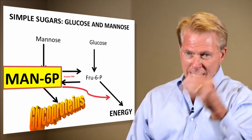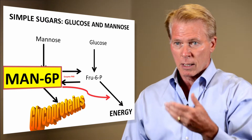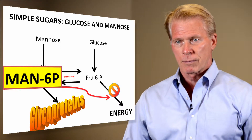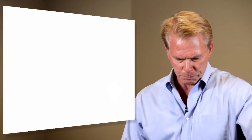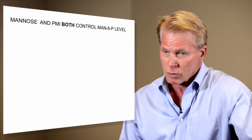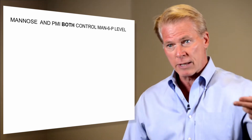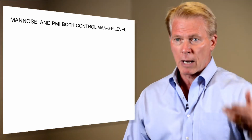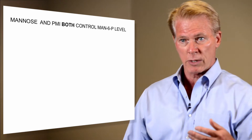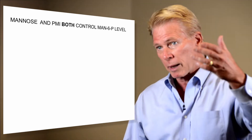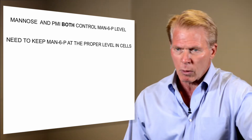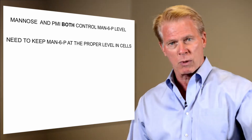It resulted in an inhibition of this process called glycolysis, which is what generates energy. And so those cells died. So mannose can be a friend or it can be a toxin. It depends not only on the level of enzyme that you have, but also on the amount of mannose that the cell has to deal with. Different cells have different amounts of phosphomannose isomerase, and therefore they metabolize and accumulate mannose 6-phosphate at a different rate. The eyes were the most sensitive, so you have to keep that at the right levels.